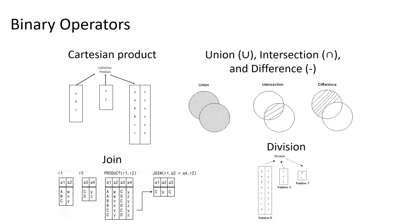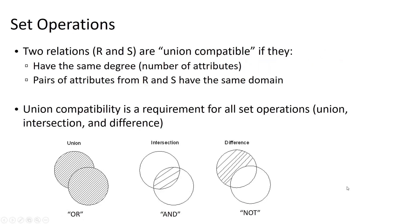Next we'll look at some binary operators — specifically our three set theory operators of union, intersection, and difference, plus a brief look at joins. We'll revisit Cartesian product and division later. To use any of the three set theory operators, the two relations must be union compatible, meaning they have the same degree (same number of attributes) and each pair of corresponding attributes are from the same domain. Union compatibility is required for all three set theory operators.